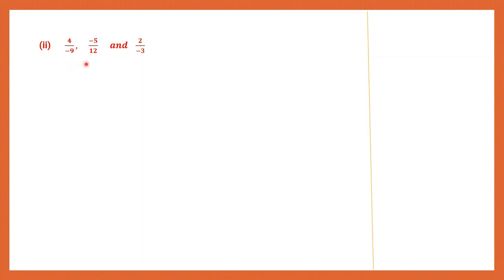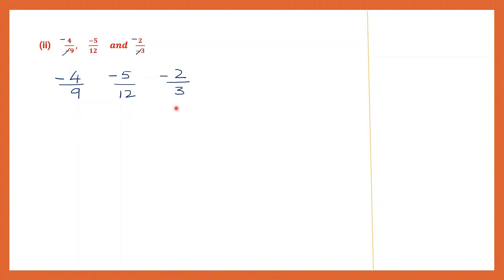Question 2. Here also we are going to first get the standard form of all three rational numbers. The first one we have is 4 by minus 9 — we will take away the minus sign from the denominator and put it in the numerator, so that becomes minus 4 by 9. The next one is minus 5 by 12. And the last one also has minus in the denominator, so that becomes minus 2 by 3. The denominators are all different: 9, 12 and 3, so we must find the LCM.